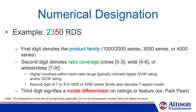Also, a 7 or 8 as the second digit in a 3000 or 4000 series transmission denotes that the transmission is a 7-speed model. The third digit signifies a model differentiator on ratings or features, like Park Pawl. Keep in mind, while the designations listed here are generally applicable, not all transmission models follow the stated structure.